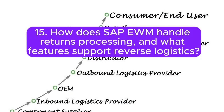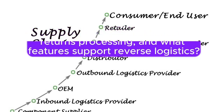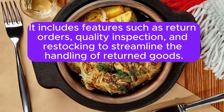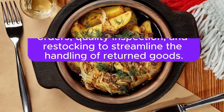Question 15: How does SAP EWM handle returns processing and what features support reverse logistics? SAP EWM supports efficient returns processing by integrating with reverse logistics processes. It includes features such as return orders, quality inspection, and restocking to streamline the handling of returned goods.